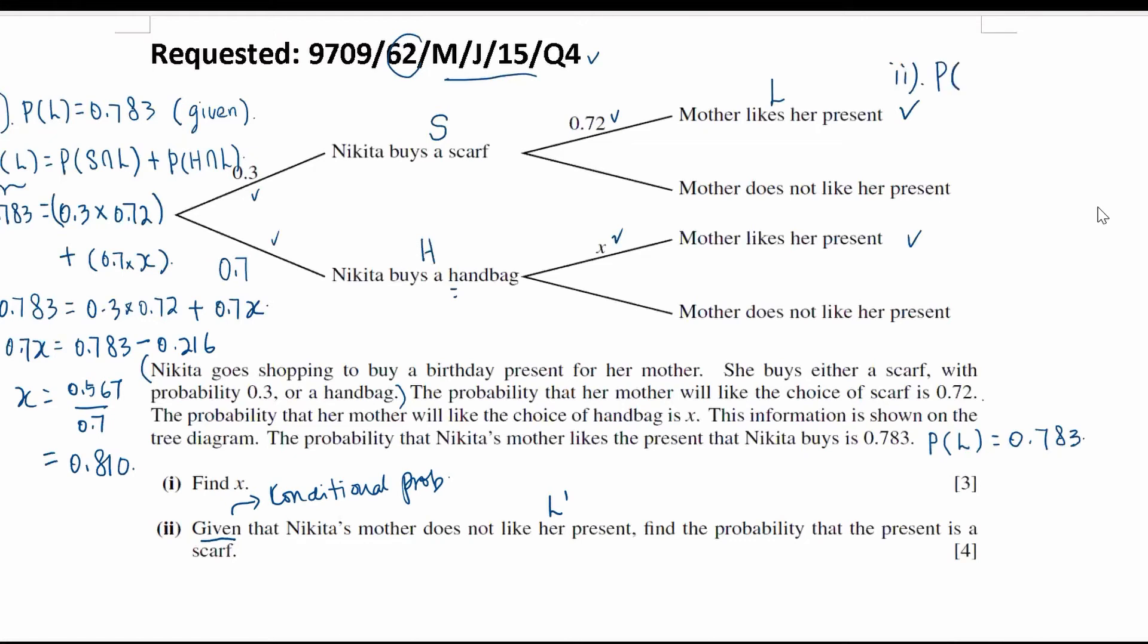Whatever is given, you put at the back. So, given that does not like L prime. What is the probability that the present is a scarf? According to the formula for conditional probability, it's given as S intersect with L prime and divided by L prime.